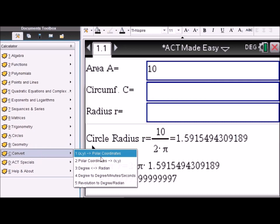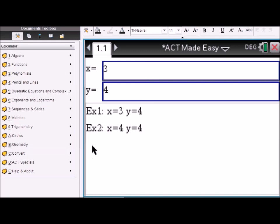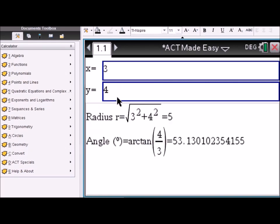Conversions. You can do rectangular-polar conversion, degree-radian, degree to degree-minutes-seconds, or also revolutions to degrees. As an example, say I'm given 3, 4 as rectangular coordinates. Then the radius and the angle are 5 and 53 degrees.